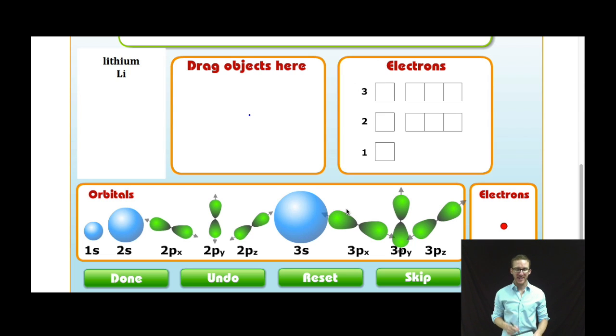Hey, what's up everybody, it's Mr. Boylan. In this video we're going to practice electron configurations in orbital notation. I'm going to use this simulation to help you visualize what's going on.